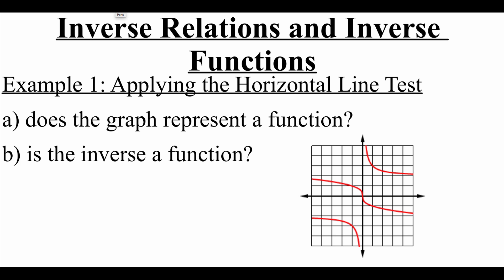Now I've changed the picture, but we're doing the same exact thing. We want to first check does the graph represent a function using the vertical line test. If I draw in a vertical line right here, I can see that vertical line is intersecting at more than one point. So no, this one is not a function. But now if we found an inverse, would it be a function? We use the horizontal line test. Drawing in any horizontal lines, those lines will never intersect our graph at more than one place. So yes, this inverse would be a function.